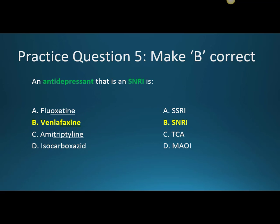Now we're going to make B correct. An antidepressant that is an SNRI is B, venlafaxine. Fluoxetine is an SSRI, only inhibiting serotonin. Amitriptyline does work in the same way that SNRIs do, but they're named after their shape. And isocarboxazid is an MAOI.